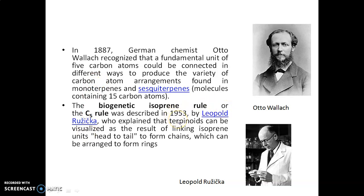In the year 1953, another Nobel laureate Leopold Ruzicka, a Croatian-Swiss chemist, explained that terpenoids can be visualized as the result of linking isoprene units head to tail to form a chain, which can then be arranged to form rings. The biogenetic isoprene rule suggests that isoprene units attach together by head-to-tail condensation to form several terpenoids and their derivatives.